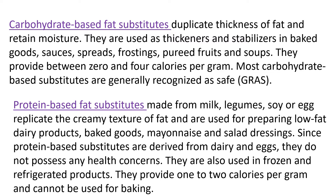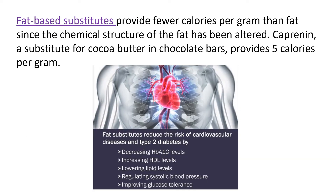The second one is protein-based fat substitutes. They are made from milk, legumes, soy, or egg. They replicate the creamy texture of fat and are used for the preparation of low fat dairy products, baked goods, mayonnaise, and salad dressing. Since protein-based substitutes are derived from dairy and eggs, they do not possess any significant health concerns. They are also used in frozen and refrigerated products. They provide 1 to 2 calories per gram and cannot be used in frying.